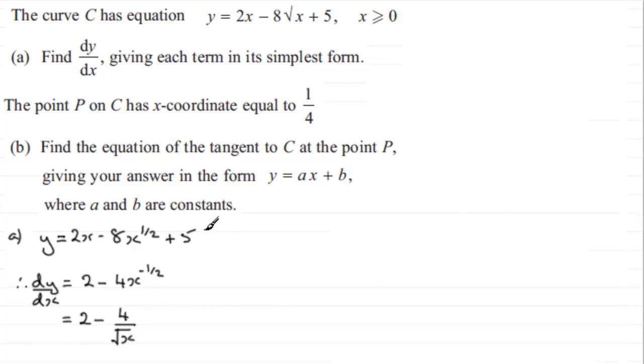Now in the next part, part B, let's just draw a margin there. So in part B what have we got to do? Well it says that the point P on the curve C here has x coordinate equal to a quarter. And we've got to find the equation of the tangent to C at the point P. And give our answer in the form y equals ax plus B where A and B are constants.